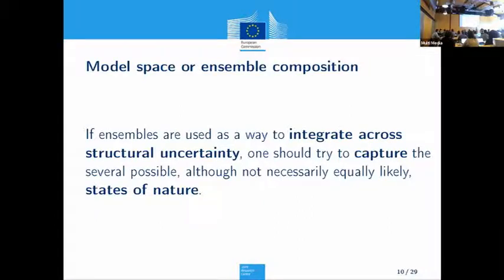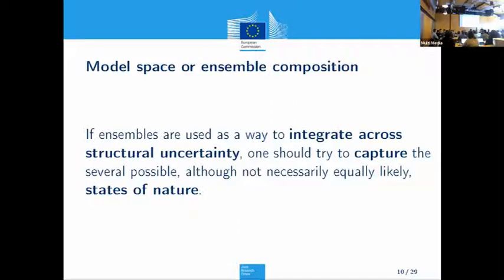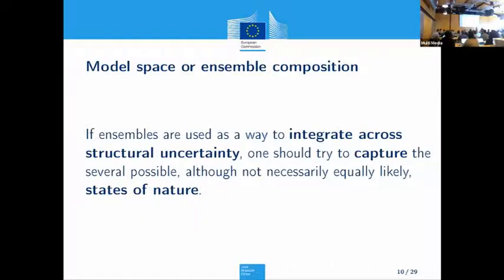One common criticism — quite rightly — is that the way you build your ensemble, the models you put in it may bias the results. Say you have two situations in your system and a bunch of models that model one better than the other. If you have 1,000 models for one situation and two for the other, and you simply average across all of them, you're overweighting the situation for which you have more models. We've been thinking about this as the 'model space' — how do you build an ensemble where the components actually cover all the possibilities for that particular system?